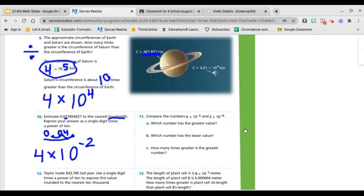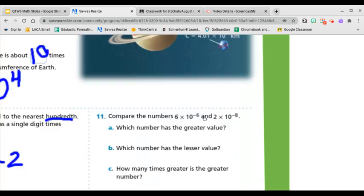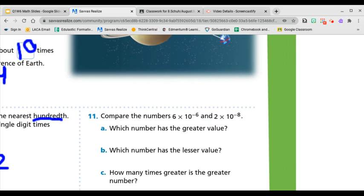11 says compare the numbers 6 times 10 to the negative 6th power and 2 times 10 to the negative 8th power. Which number has the greater value? They both have negative exponents, which means they're both numbers that are going to be decimals less than one. Because negative exponents are small, tiny numbers. So when we're comparing numbers in scientific notation, you don't compare these numbers first, you compare the exponents.